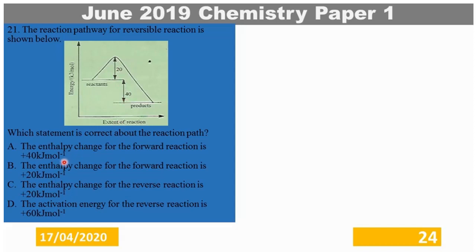Option A says the enthalpy change for the forward reaction is plus 40 kJ per mole. This is wrong because we have established that the forward reaction is exothermic. Therefore, the enthalpy change for the forward reaction would be minus, not plus.